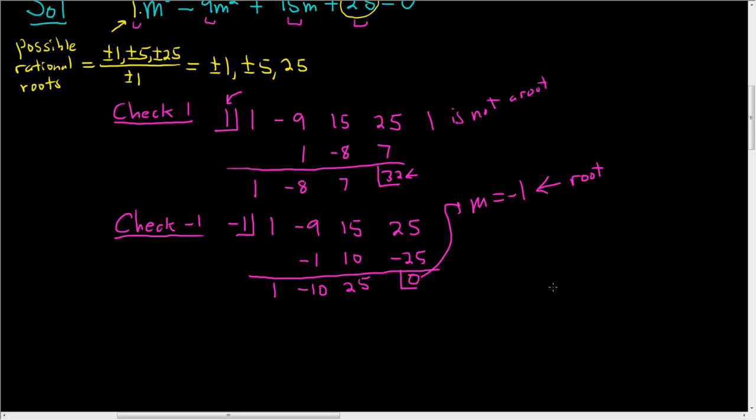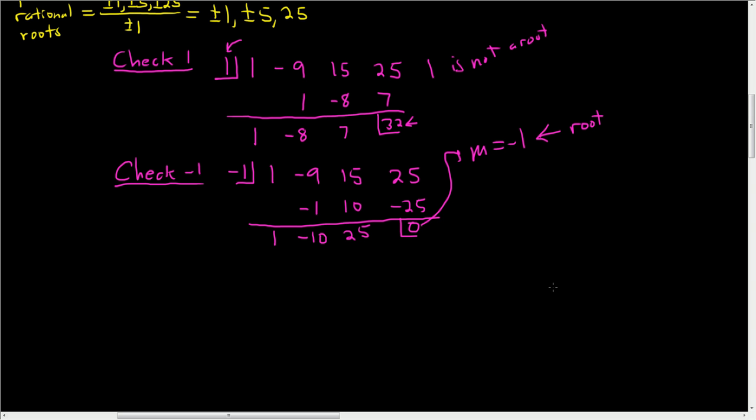So to finish, we started with an equation of degree 3. So we take this piece, and we write it as an equation of degree 2. So it's 1 times m squared, which is just m squared, minus 10 times m, plus 25. And that's equal to 0.